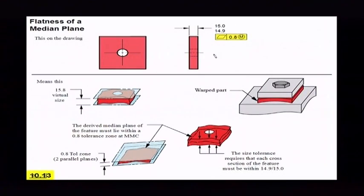So what this was is remember that when you call off the size, it automatically controls the form of it. Now you see how the application is parted can warp like this. And really that's not that big of a deal. It was just the local size that was important. So they put a flatness of a median plane on there to relax the form tolerances.